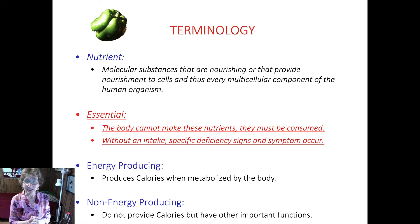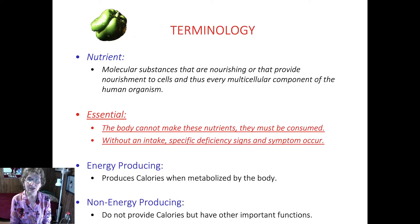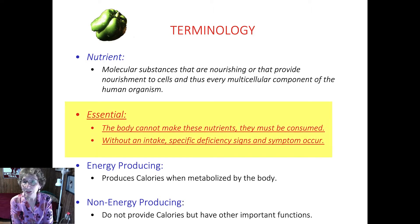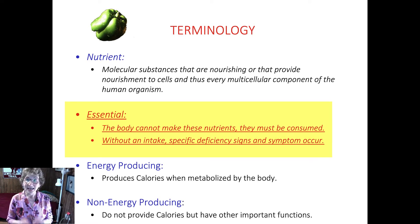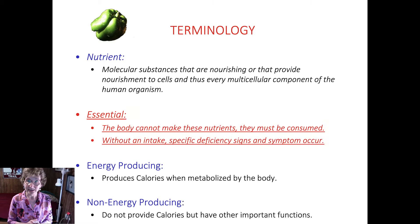Nutrients are molecular substances that are nourishing or provide nourishment to every cell and thus every cellular component of the human organism. Nutrients can be essential or non-essential. Essential nutrients are the ones that the body can't make, or make enough of, and therefore they must be consumed in the diet. Without consuming these foods over time, specific deficiency symptoms can develop, which can be reversed when that nutrient is added back to the diet.